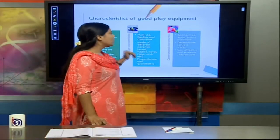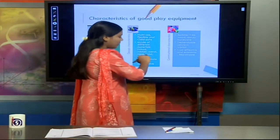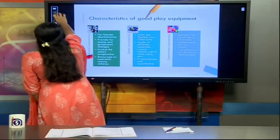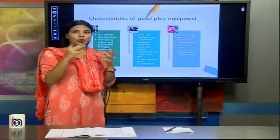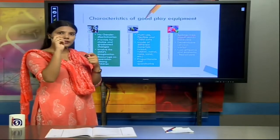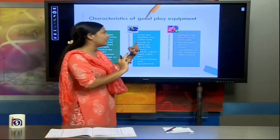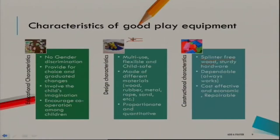We are going to talk about the constructional characteristics of play equipment. The first point is splinter-free wood. Splinter-free means — if you have ever observed a wooden piece, sometimes there is a crack or a small piece of wood which is hidden in it. We call it a splinter. For example, if I draw a wood piece with a small crack, that is the splinter in the wood. And sturdy hardware.